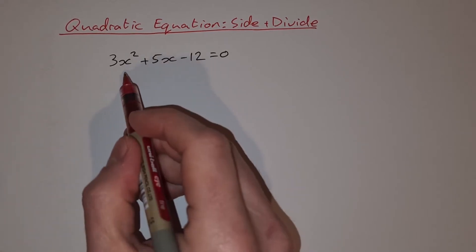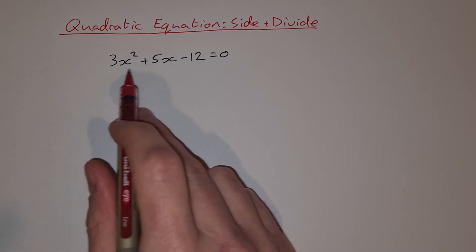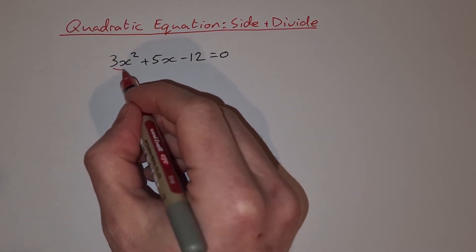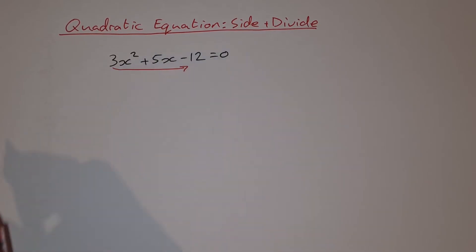So slide and divide, what you do is you take your quadratic equation like this, you take the coefficient of the x squared, you slide it down and you multiply it by the minus 12.